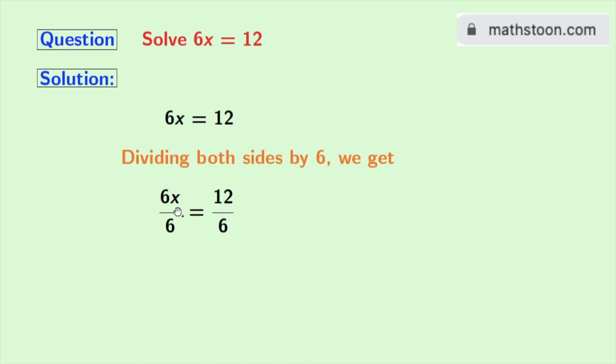Now look that in the left hand side, 6x gets cancelled. So we get x in the left hand side.